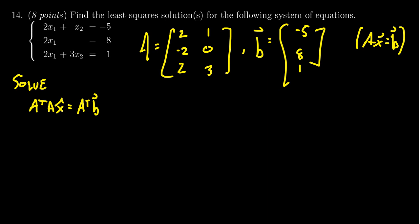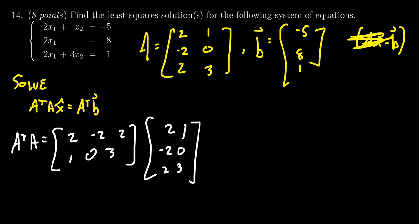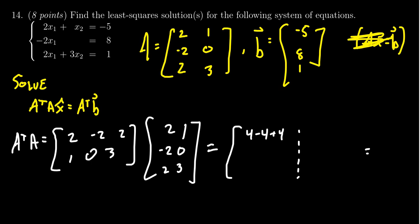We have to compute A transpose A. A transpose takes the rows of A and turns them into columns, so A transpose is [2, -2, 2; 1, 0, 3]. Computing A transpose A is just taking all possible dot products between columns of A. The dot product of the first column with itself gives 4 plus 4 plus 4.